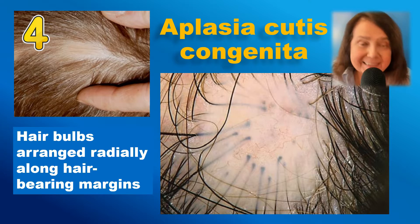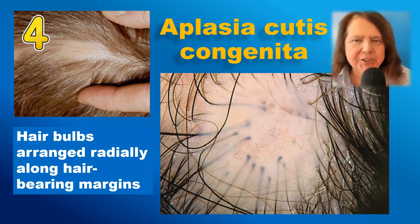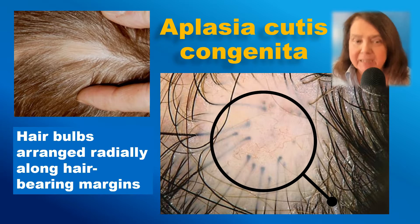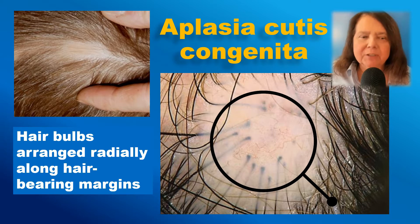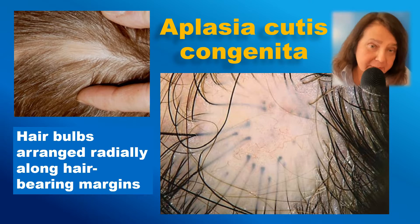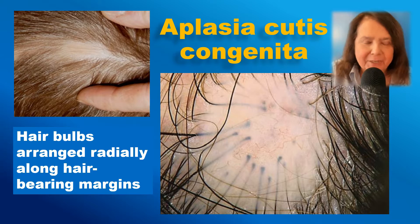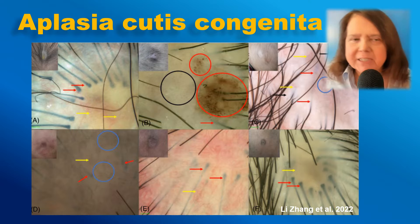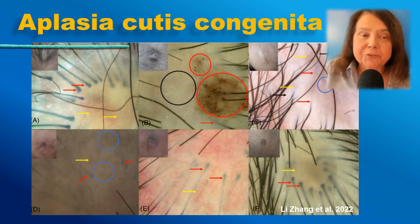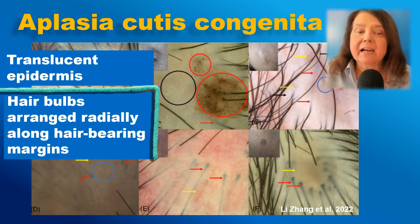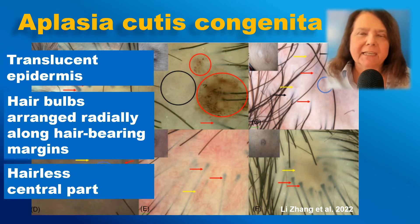Image number 4. In this image we see hair loss due to aplasia cutis congenita. Here we will see the typical trichoscopy image of hair bulbs arranged radially along the hair-bearing margin, with a hairless area in the mid part. This is a disease usually diagnosed in very young children. A recent article summarized the most typical features, including translucent epidermis through which we are able to see the radially arranged hair bulbs with a hairless area in the center.